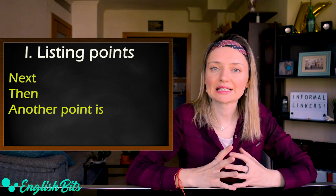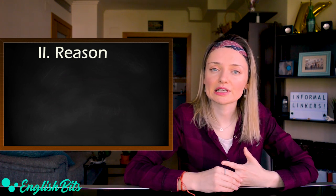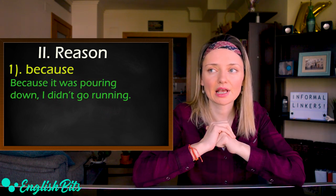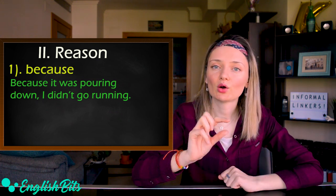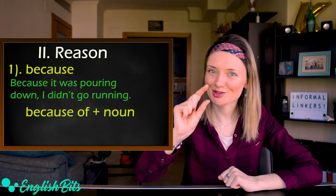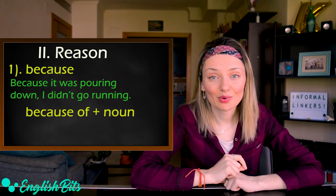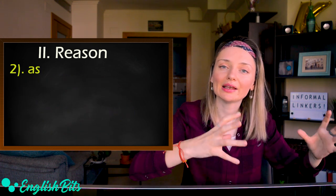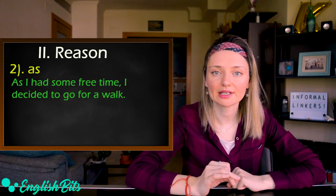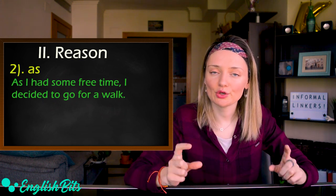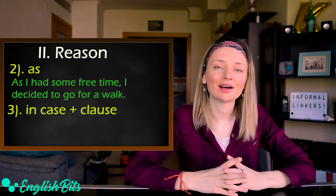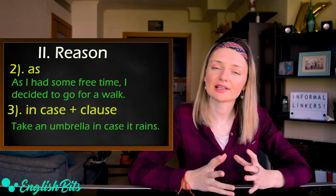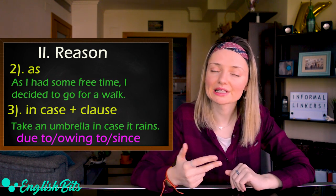Let's move on to our second group, which is reason. The most common linker to express reason is 'because.' You can use it at the beginning or in the middle of a sentence — for example: because it was pouring down, I didn't go running. We can also use 'because of' plus a noun — for example: the exam was put off because of the pandemic. Another linker is 'as,' which usually goes at the beginning — for example: as I had some free time, I decided to go for a walk. We can also use 'in case' plus a clause, meaning there is a possibility something might happen — for example: take an umbrella in case it rains. Linkers like due to, owing to, or since are more formal.